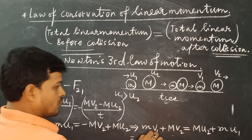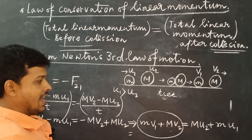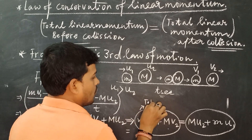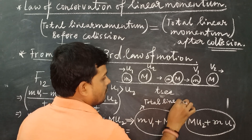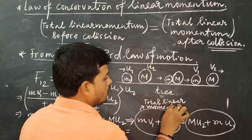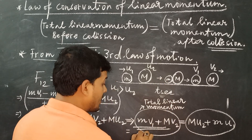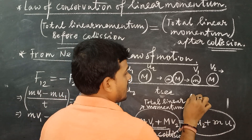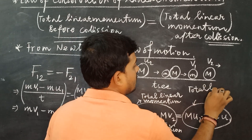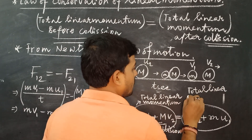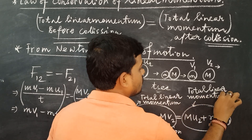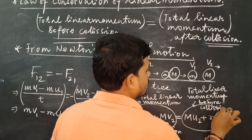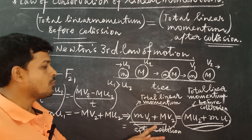So what is this? The left side, mv1 + Mv2, is the total linear momentum after collision, and the right side, mu1 + Mu2, is the total linear momentum before collision. They are equal — and this is the law of conservation of linear momentum.